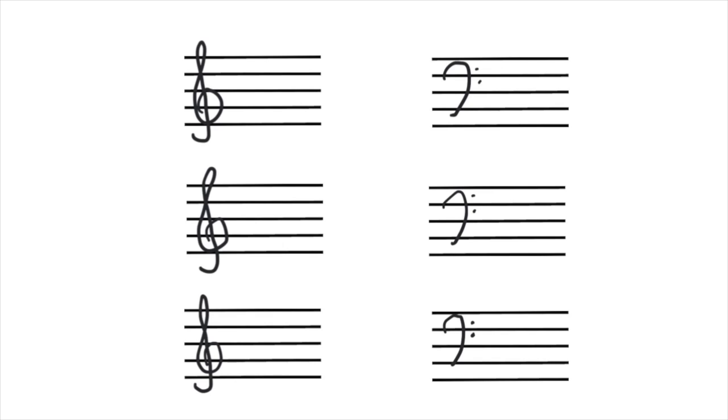These key signatures have special names. You don't need to know what the names mean, you just need to know what they are. The key signature with F-sharp looks like this on the treble clef, and like this on the bass clef, and it's called G-major.